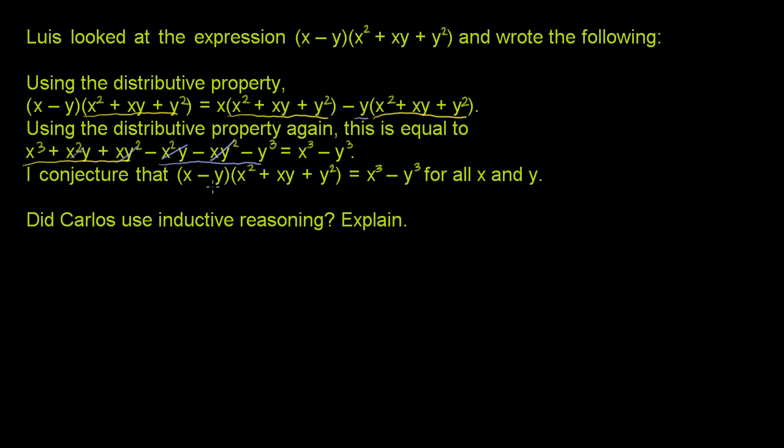I conjecture that (x - y)(x² + xy + y²) is equal to x³ - y³ for all x and y. Did Carlos use inductive reasoning? Explain.